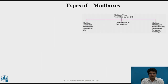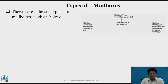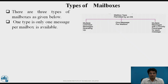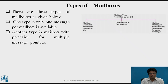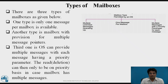Types of Mailboxes: As shown in the diagram, there are three types. Type 1: only one message per mailbox is available. Type 2: mailbox with provision for multiple message pointers. Type 3: the OS can provide multiple messages, with each message having a priority parameter; read and deletion can then only be on a priority basis when the mailbox has multiple messages.